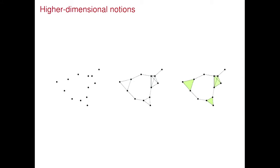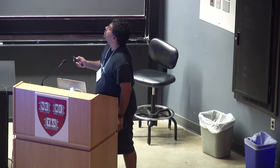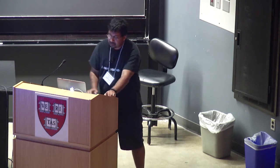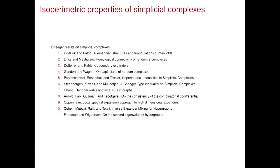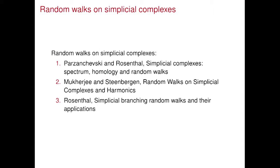How do these ideas extend when I look not at a graph but at a simplicial complex? Why might I look at a simplicial complex? In a sensor network, I care about coverage — is there a hole? I'm not asking a zeroth-homology question about connectedness; I'm asking a first-homology question. Can something like the one-Laplacian give me that? There's a lot of interesting work on isoparametric properties of simplicial complexes, and less work on random walks on simplicial complexes.